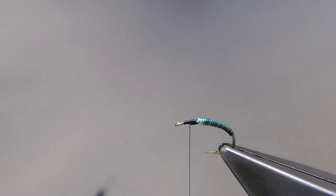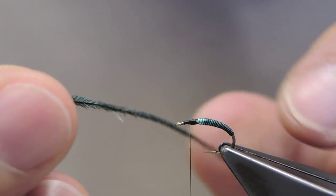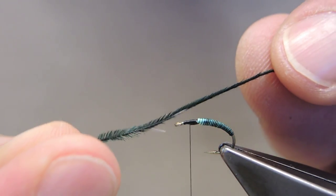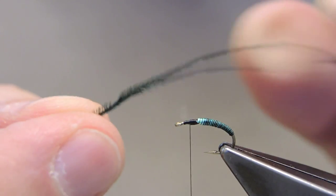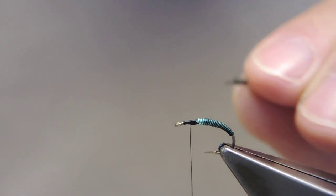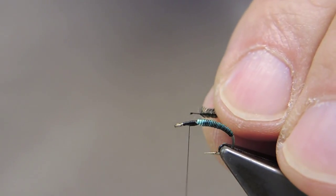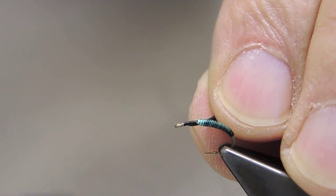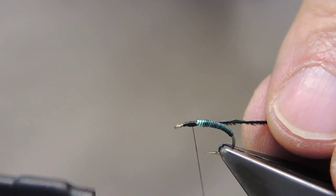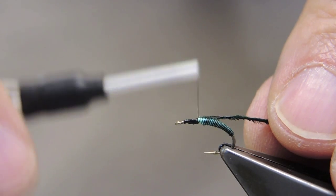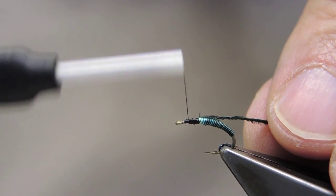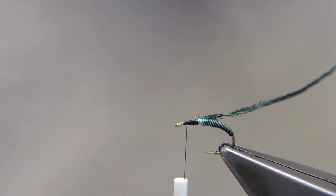The legs and thorax of the pattern, some ostrich herl, dark green in this case, or black. Just tie it down and wrap it up close to the abdomen, and then return the thread closer to the eye.